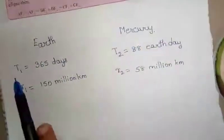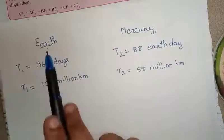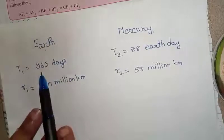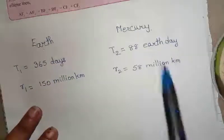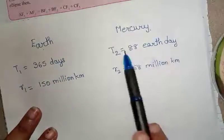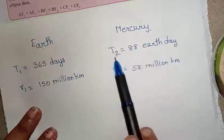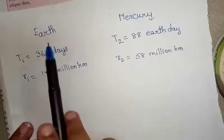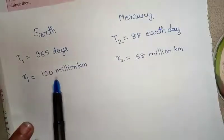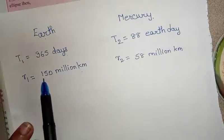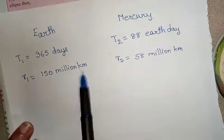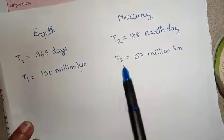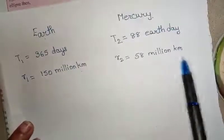We know that the time period taken by Earth to complete one revolution is 365 days, so T₁ equals 365 days. Mercury takes 88 Earth days to complete its revolution, so T₂ equals 88 Earth days. The average distance of Earth from the Sun is 150 million kilometers, so r₁ equals 150 million kilometers, whereas Mercury is 58 million kilometers, so r₂ is taken as 58 million kilometers.